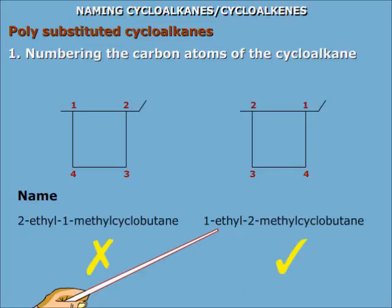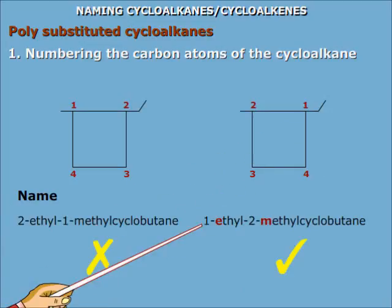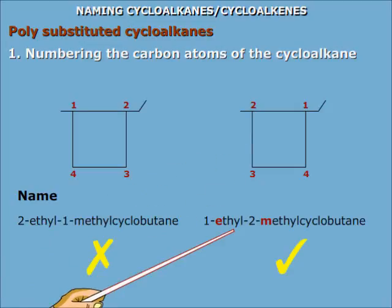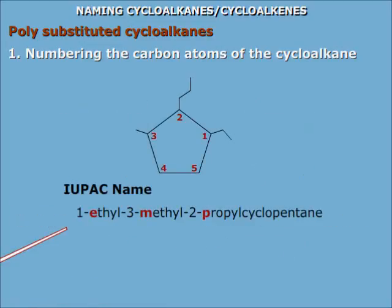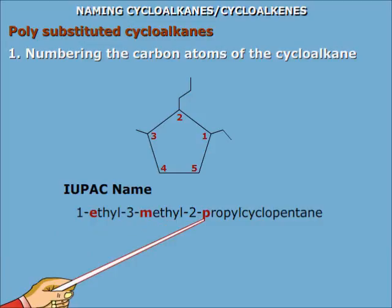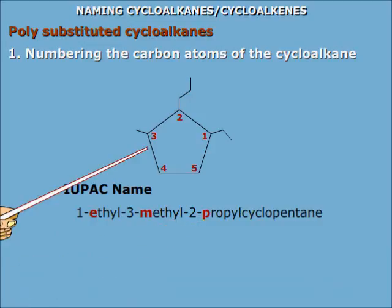When two substituents are at equivalent positions, the alphabetically prior substituent gets the lower number. The IUPAC name of this compound is 1-ethyl-2-methylcyclobutane, and NOT the alternative. While writing the names of substituents before the root word, we should properly alphabetize them. The IUPAC name of this compound is 1-ethyl-3-methyl-2-propylcyclopentane.